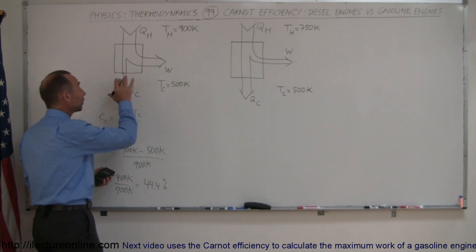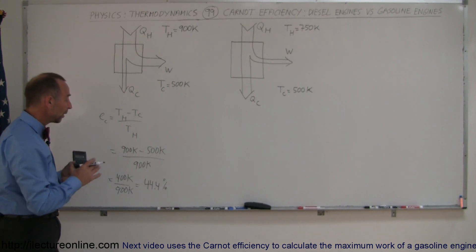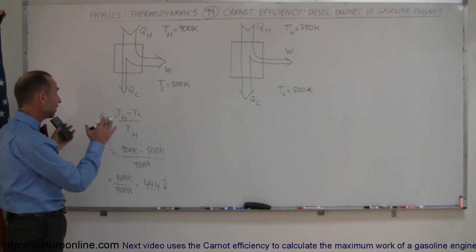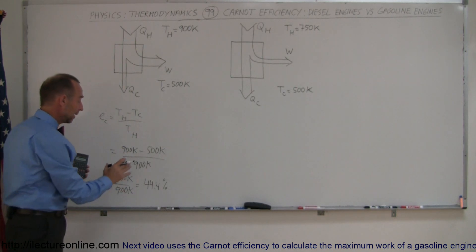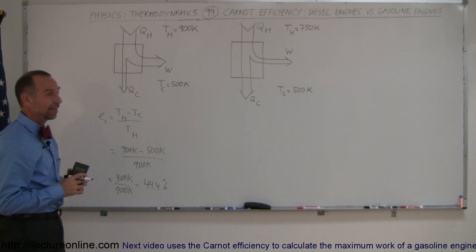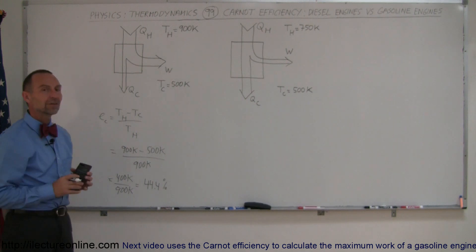Does that mean that this particular diesel engine is 44.4% efficient? No, it doesn't mean that at all. What that means is that the best the engineers can hope for when they build this diesel engine operating under those temperatures is 44.4%. It will probably be significantly less than that, but that's the highest they can achieve.